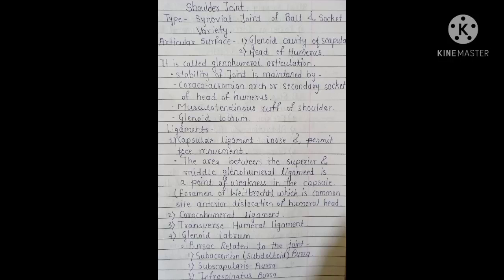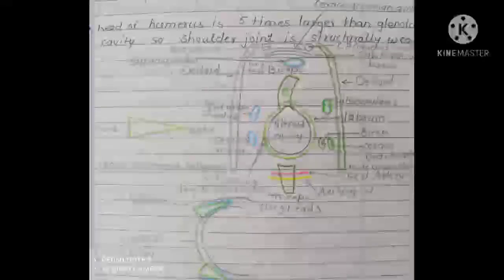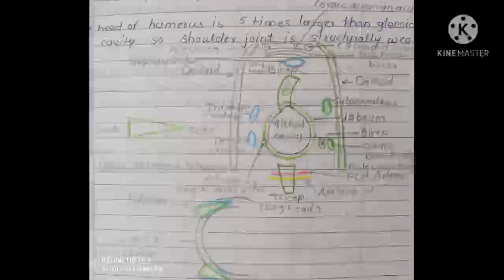Ligaments of the shoulder joint include the capsular ligament, which is loose and permits free movement. The area between the superior and middle glenohumeral ligament is a point of weakness in the capsule, called the foramen of Weitbrecht, which is a common site for anterior dislocation of the humeral head. Other ligaments include the coracohumeral ligament, transverse humeral ligament, and glenoid labrum. Related bursae are the subacromyal bursa (subdeltoid bursa), subscapularis bursa, and infraspinatus bursa.